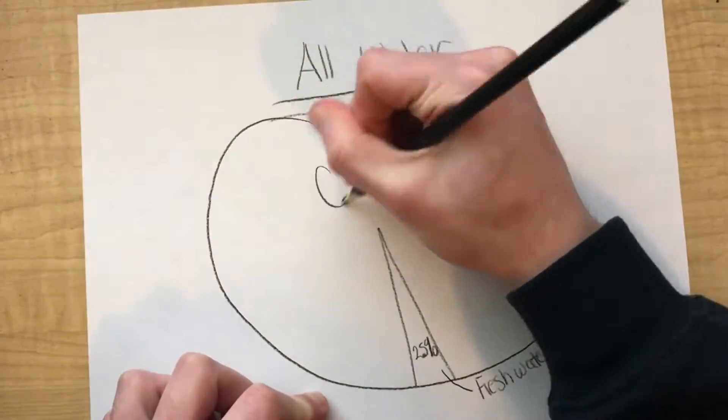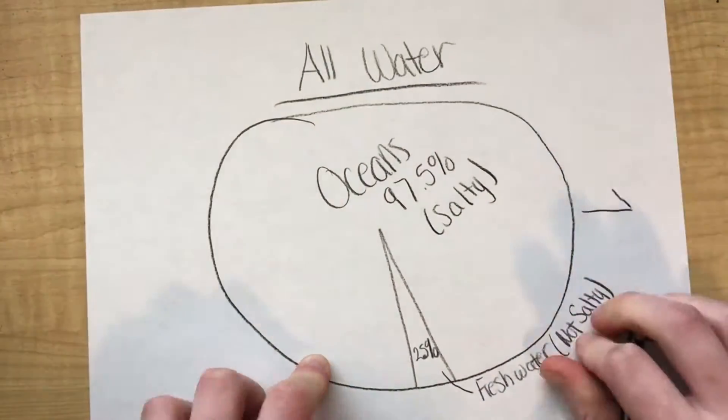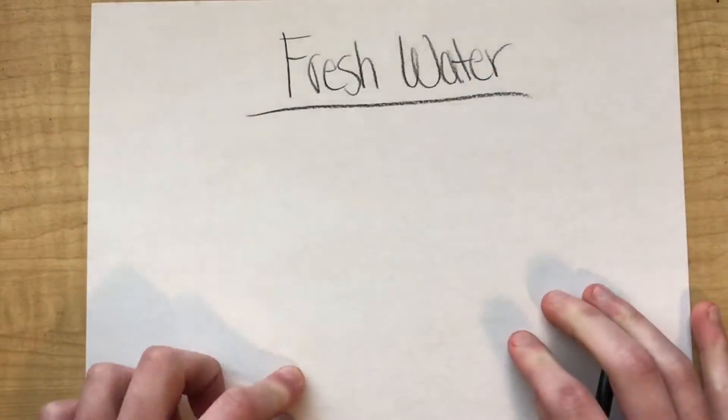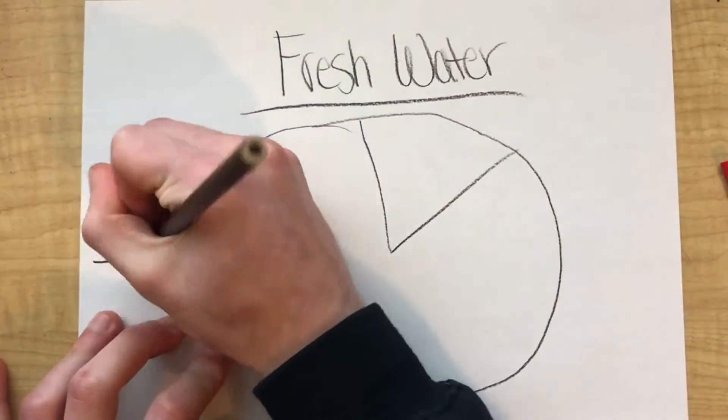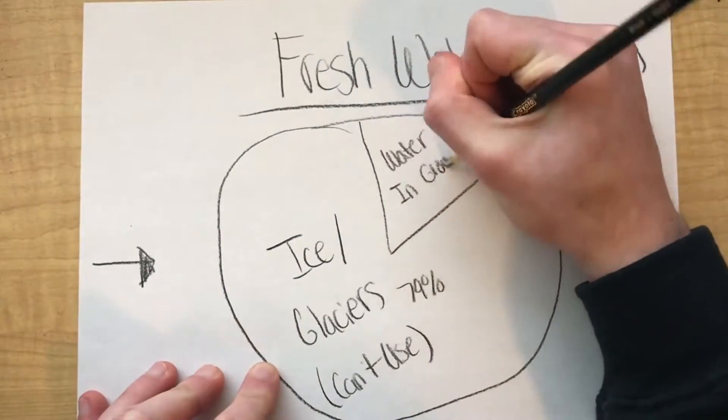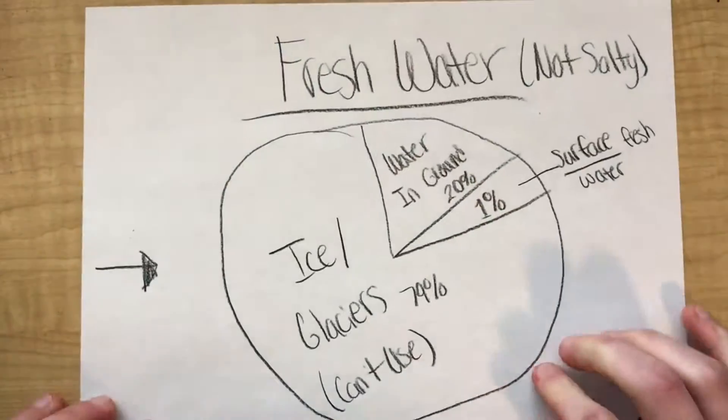The remaining 2.5% of our planet's water is freshwater. However, not all of that freshwater is accessible to us. Of the planet's freshwater, most of it is found in ice caps and glaciers, but this is solid water, also known as ice, and we can't drink this.